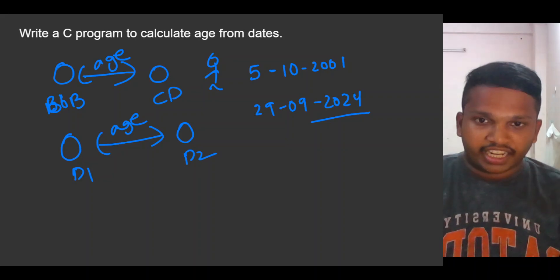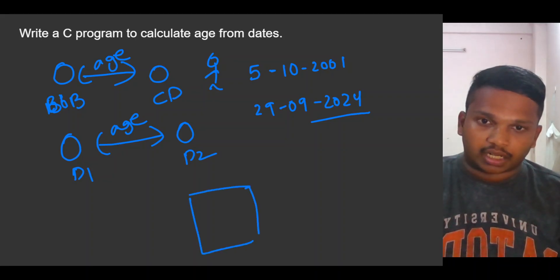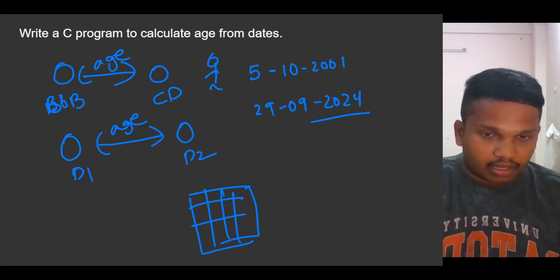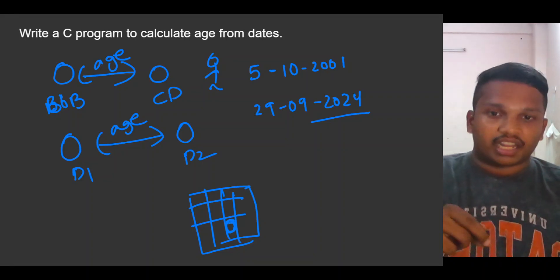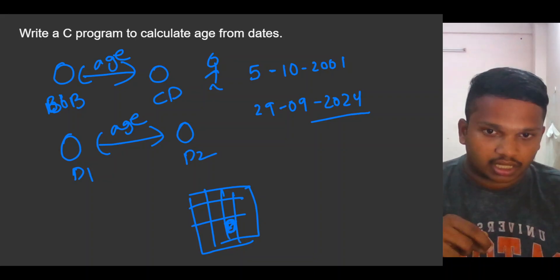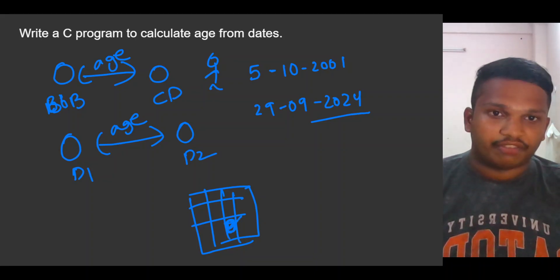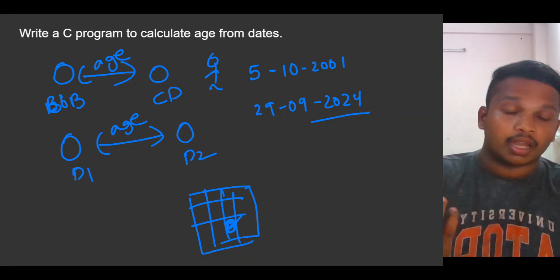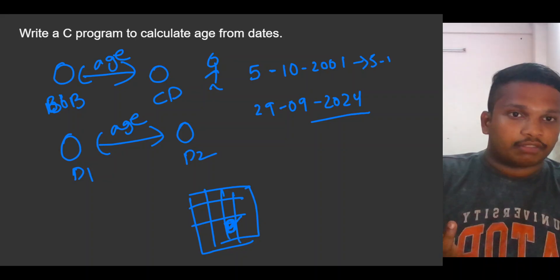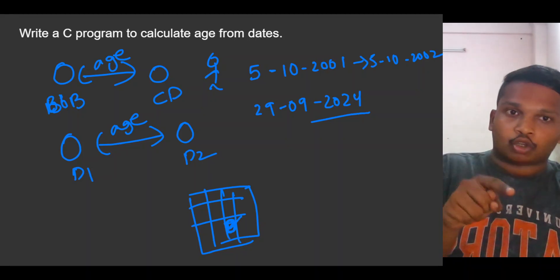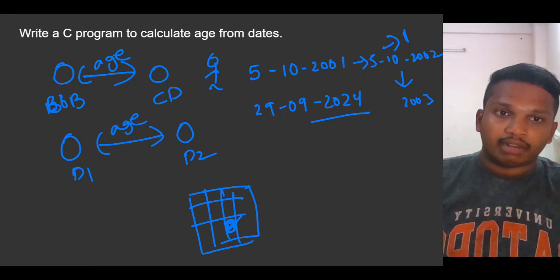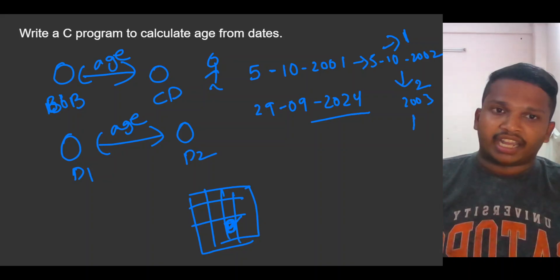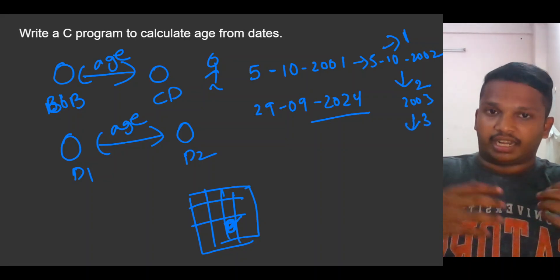How we need to calculate the age — in a calendar, if a person has born on 5th October, by completing 5th October 2002 he will get age one, 5th October 2003 he will get age two, 5th October 2004 he will get age three. Like that, by every year he will get older.